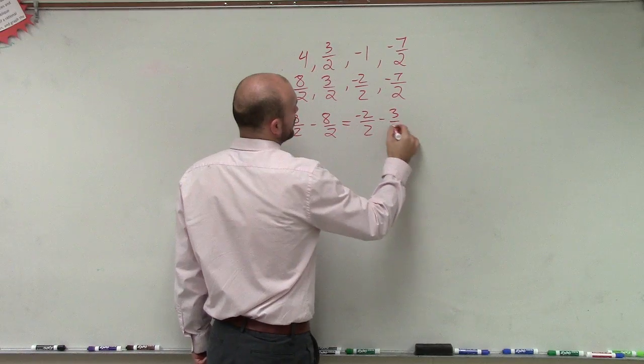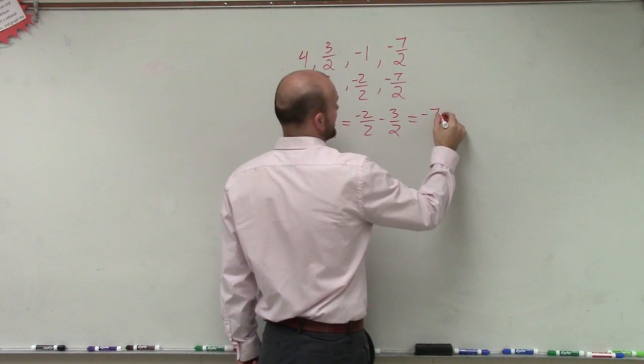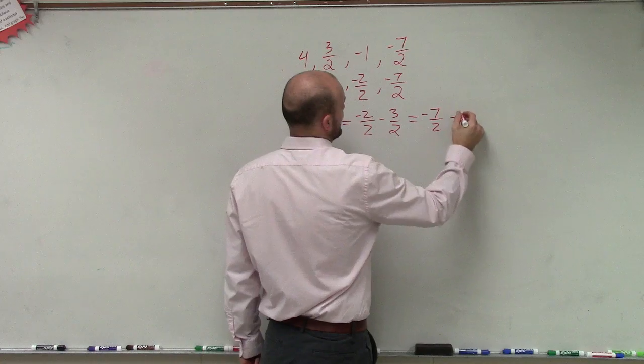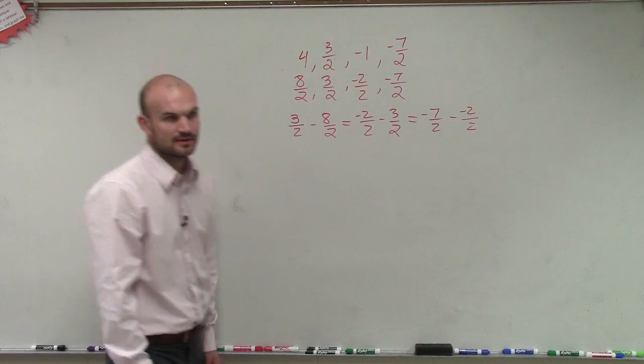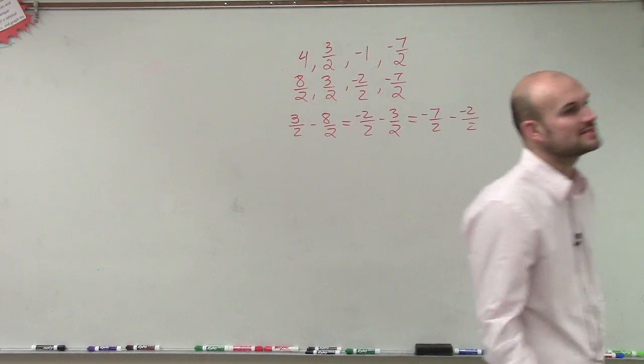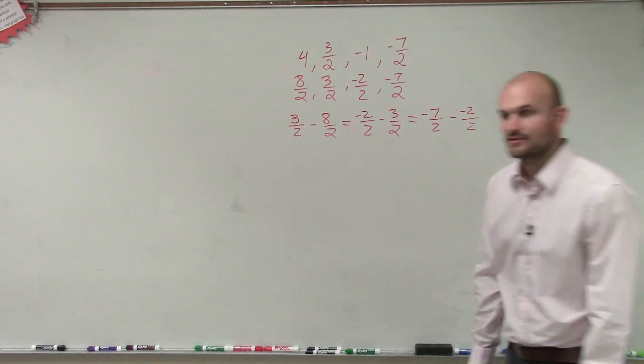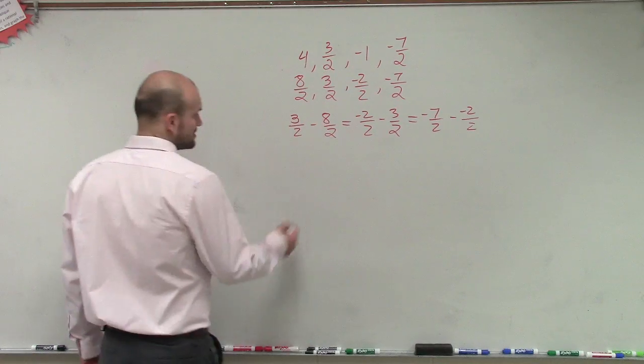which also has to be equal to negative 7 over 2 minus negative 2 over 2. And what I notice is there's a common theme. The difference between each one of those is negative 5 halves.